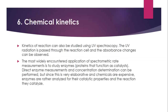The next application is chemical kinetics. The kinetics of a reaction can also be studied by UV spectroscopy. UV radiation is passed through the reaction cell and absorbance changes are observed. The most widely encountered application of spectrometric rate measurement is to study enzymes. Direct enzyme measurement and concentration determination can be performed, but since this is very laborious and chemically expensive, enzymes are analyzed for their catalytic properties and the reactions they catalyze.